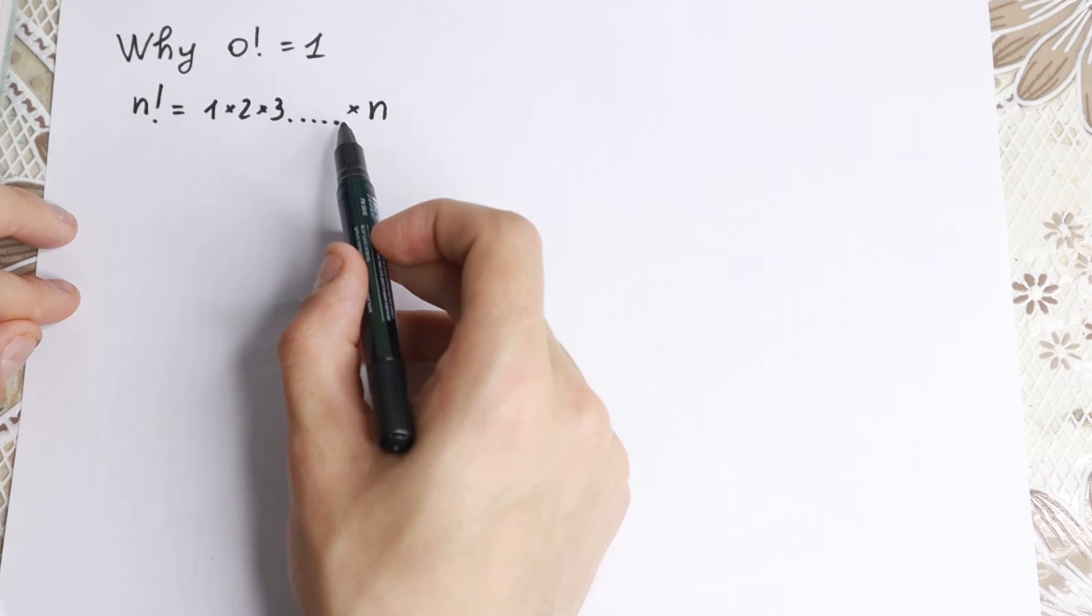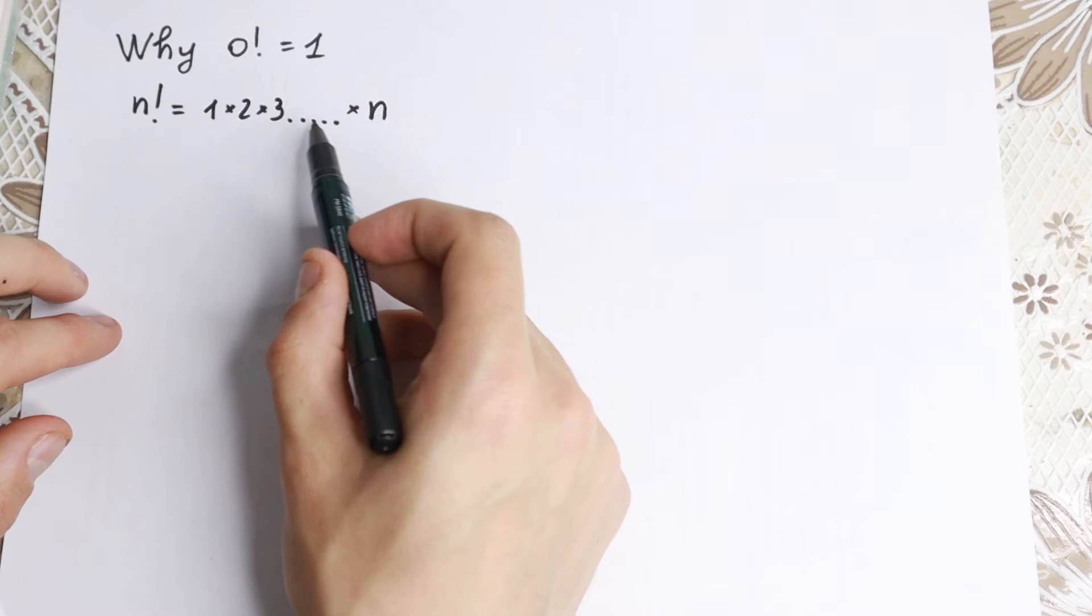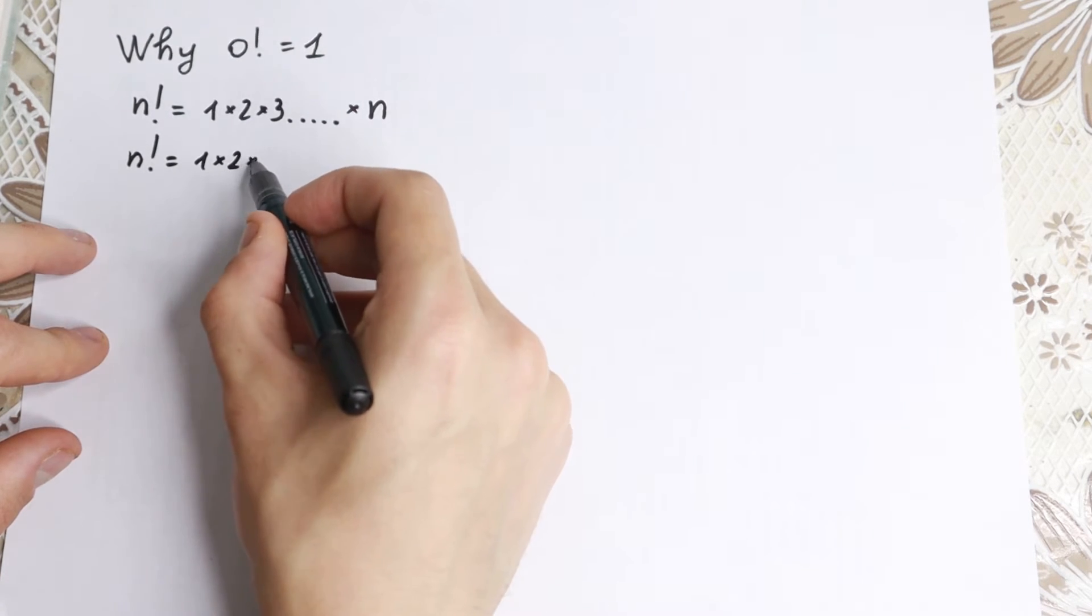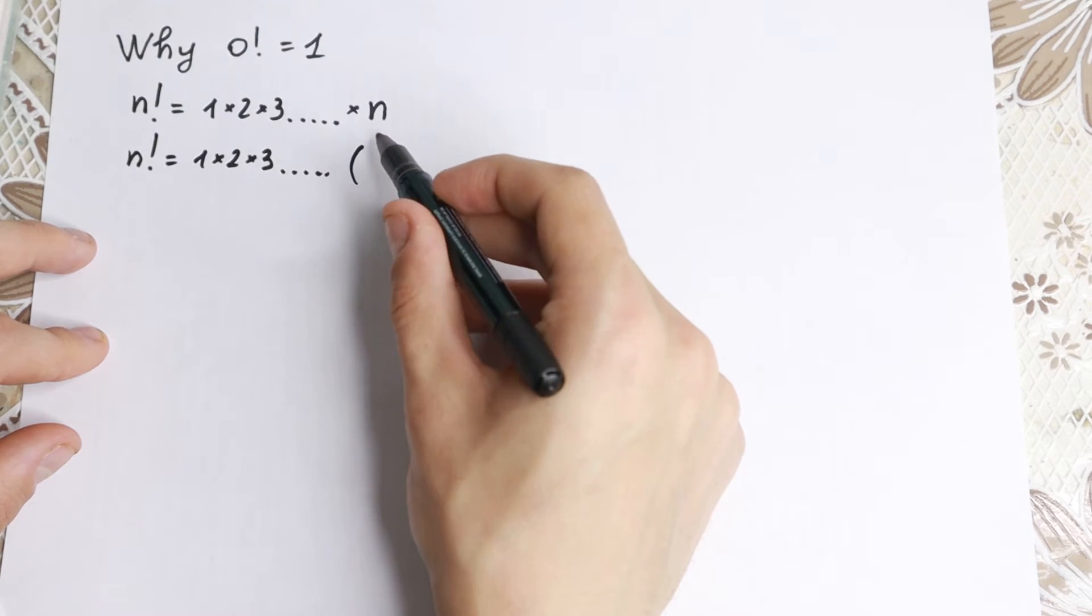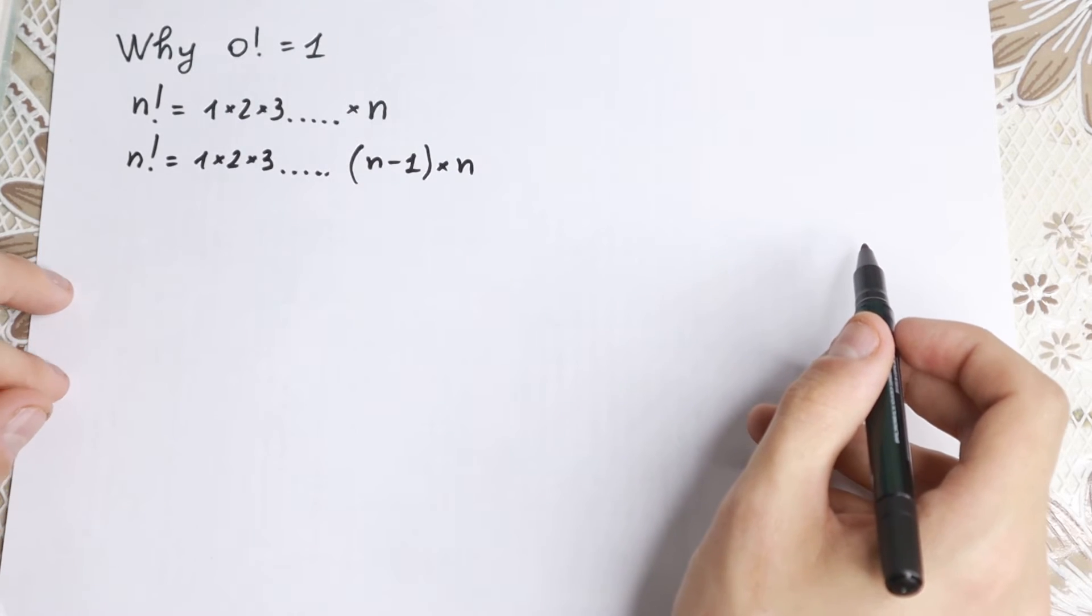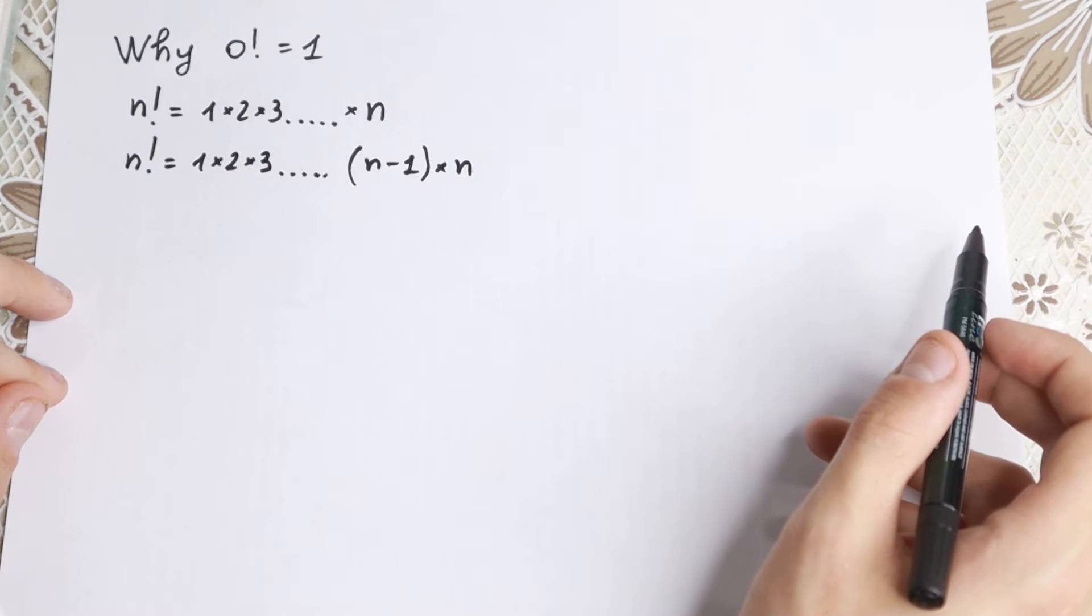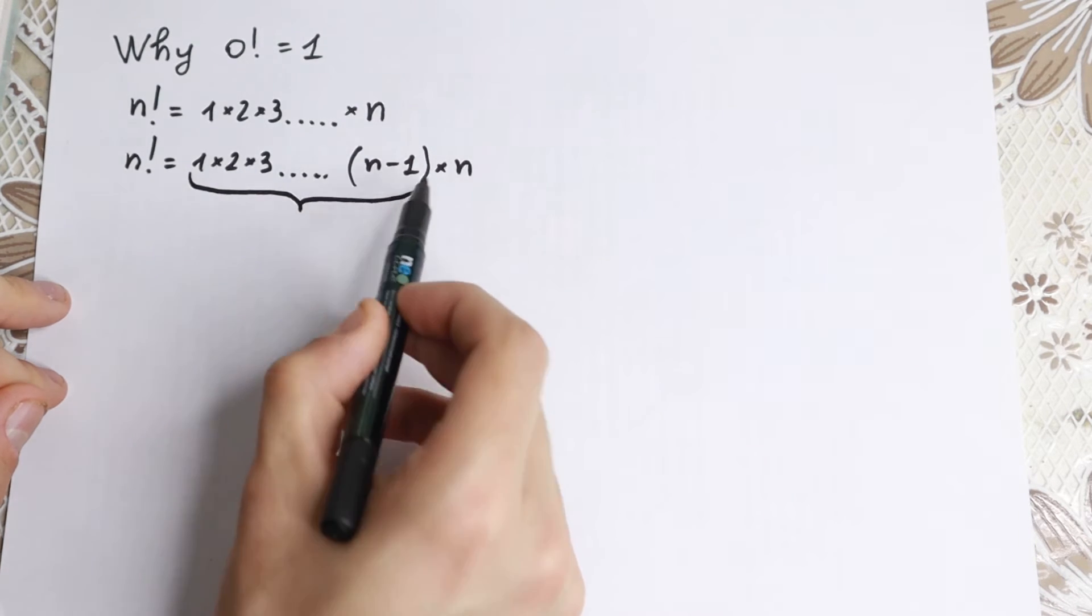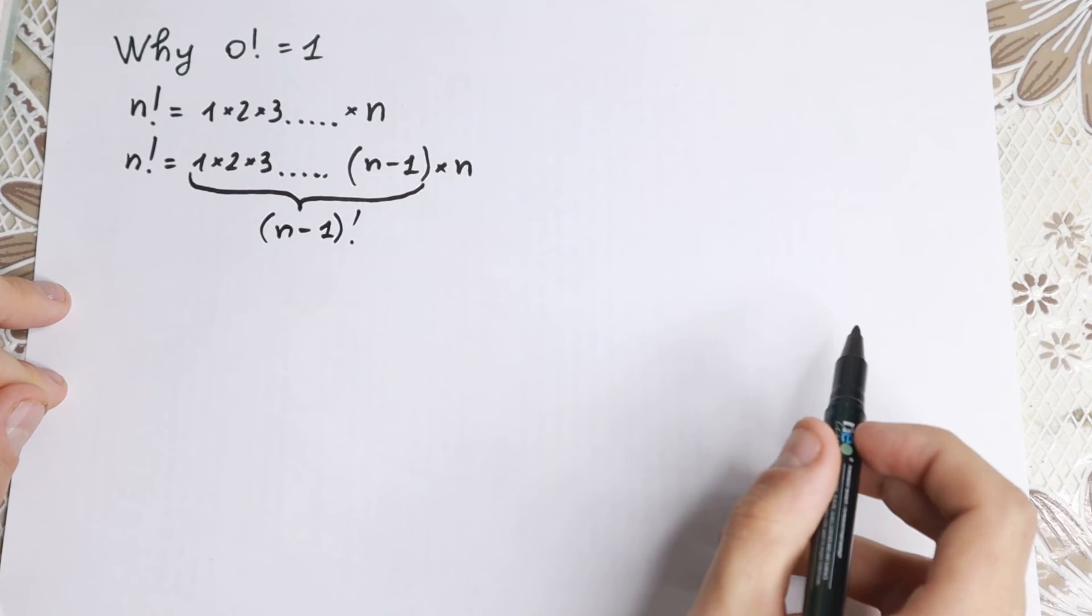I want to write a previous element right here, the previous element behind this n. So take a look, we have n factorial, we have 1 times 2 times 3, dots, and the previous element will be not n, but n minus 1, times n in the end. I hope you understand this step. But this product gives us not n factorial, we have n minus 1 factorial until this moment.